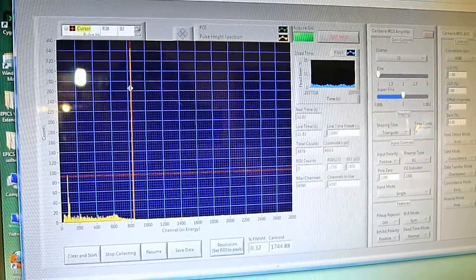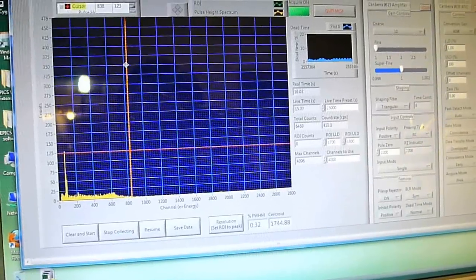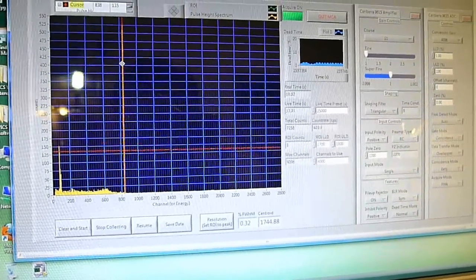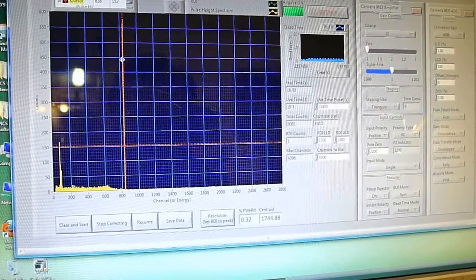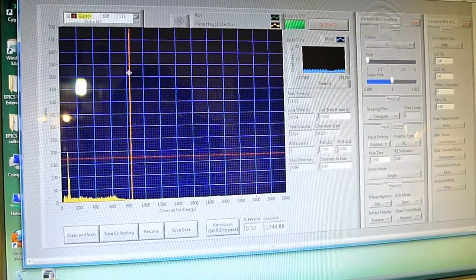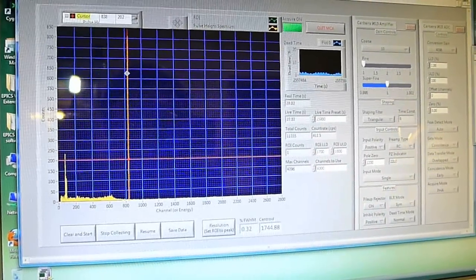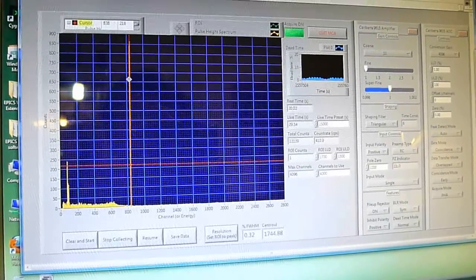This is about an 800 keV peak. It's a gamma ray from the polonium itself. Polonium decays mostly by alpha emission without this gamma ray. But in something like, oh, I don't know, a tenth of a percent of decays, you get this gamma ray.